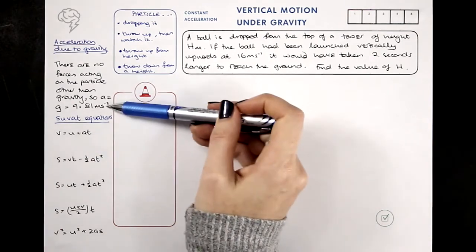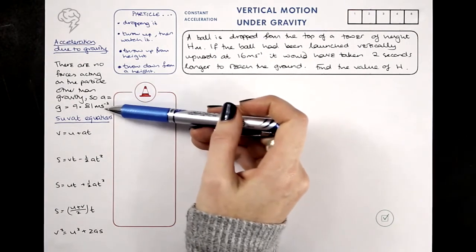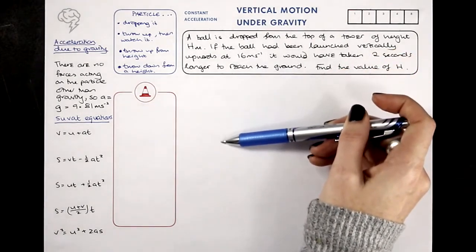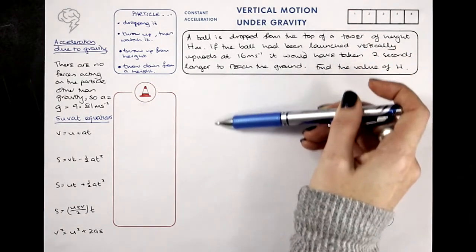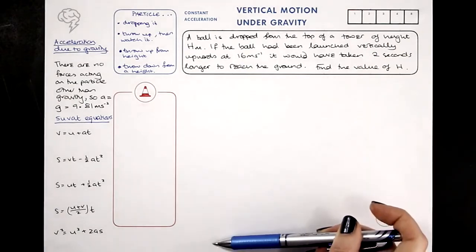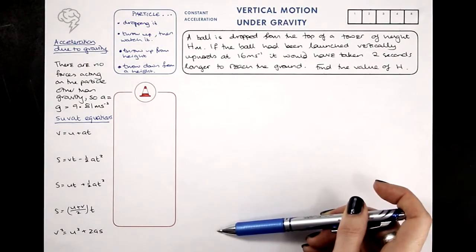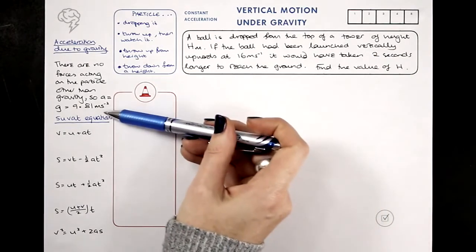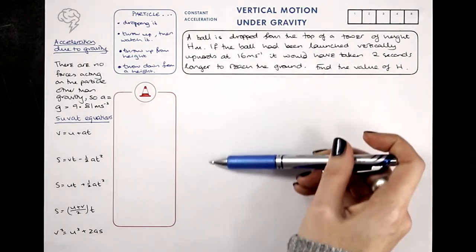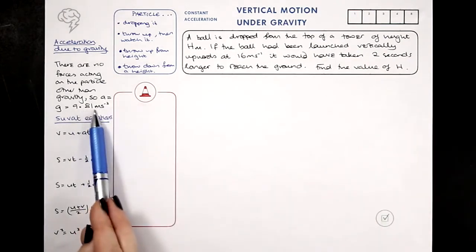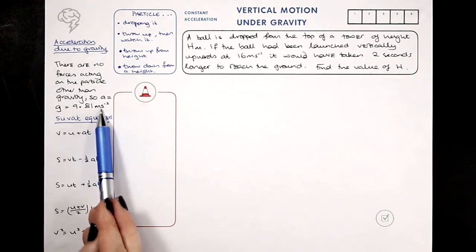And what else does it assume? It also assumes that terminal velocity is not reached. So we are going to assume that the whole time that the particle is falling, it is getting faster and faster. There is actually, in reality, a maximum speed that it can reach, terminal velocity, but we're not going to worry about that. We're going to assume that it's not falling for long enough to reach terminal velocity, so it does keep accelerating at 9.81 metres per second per second.